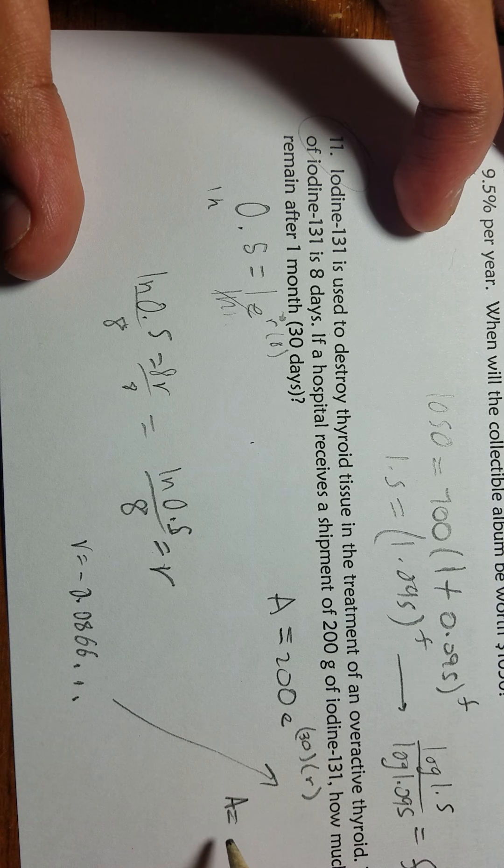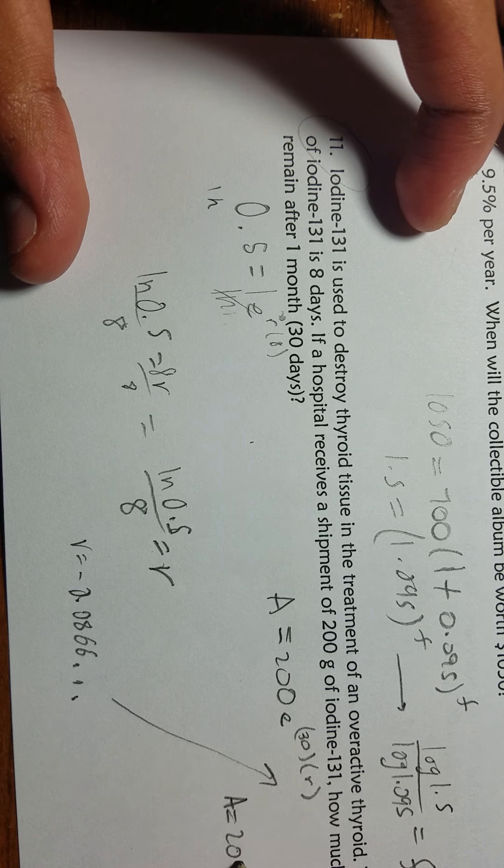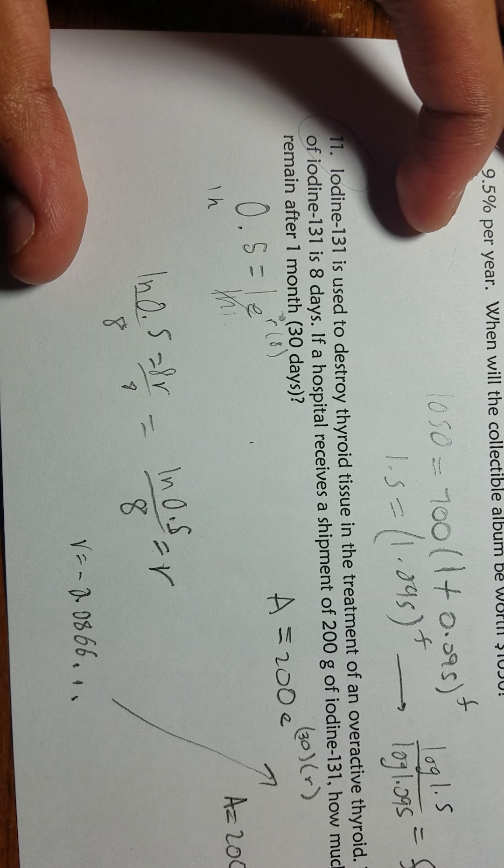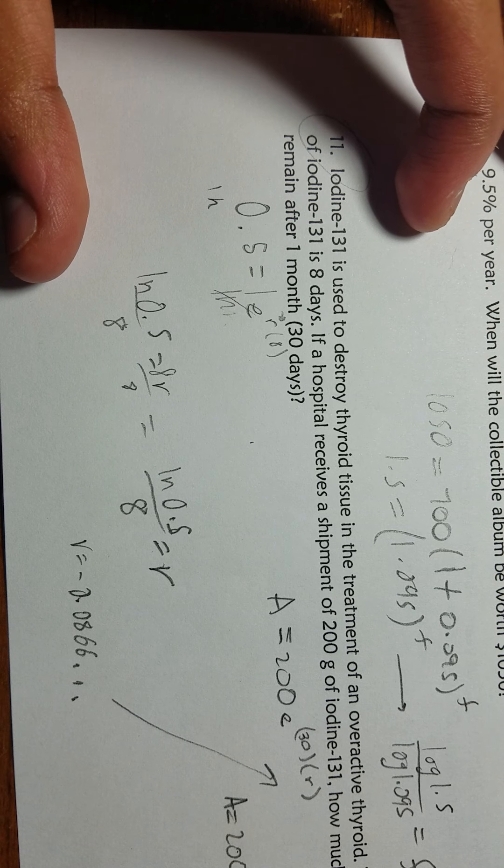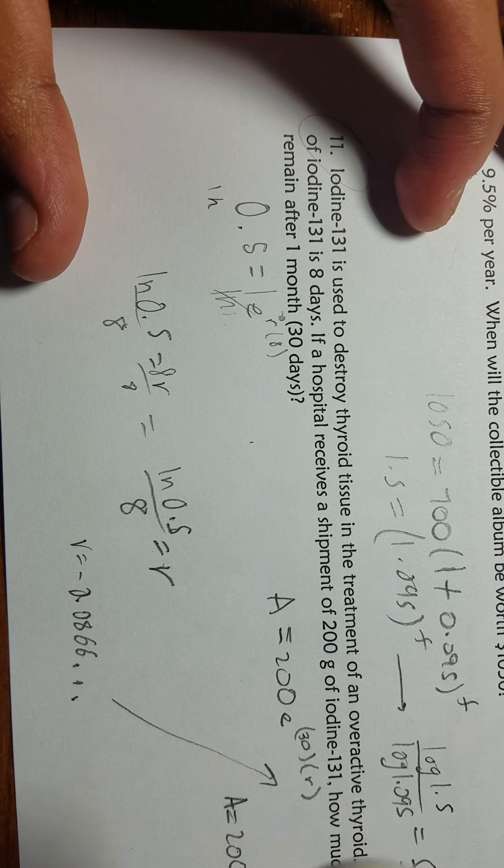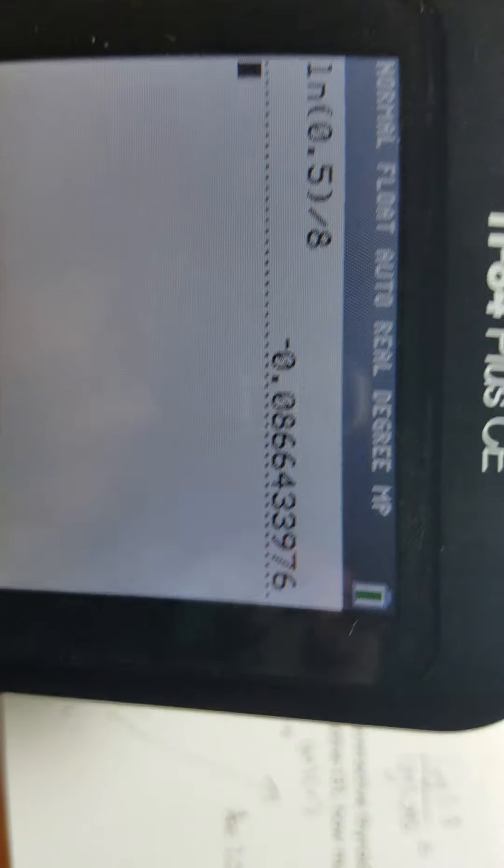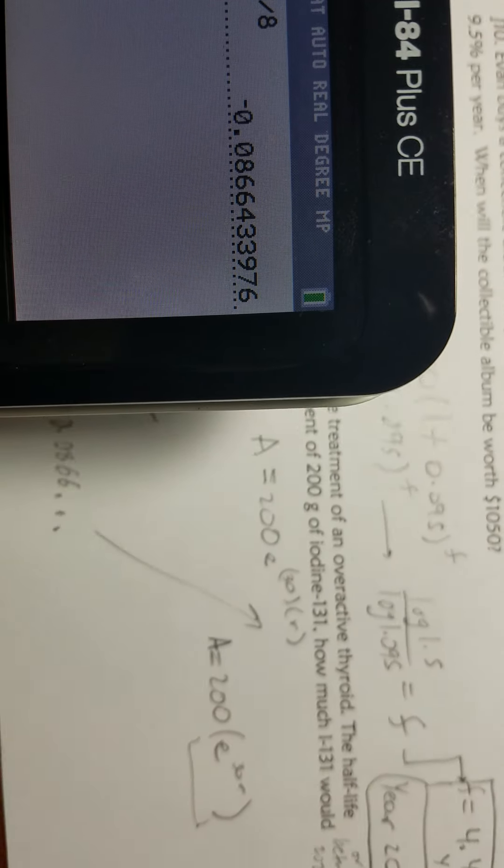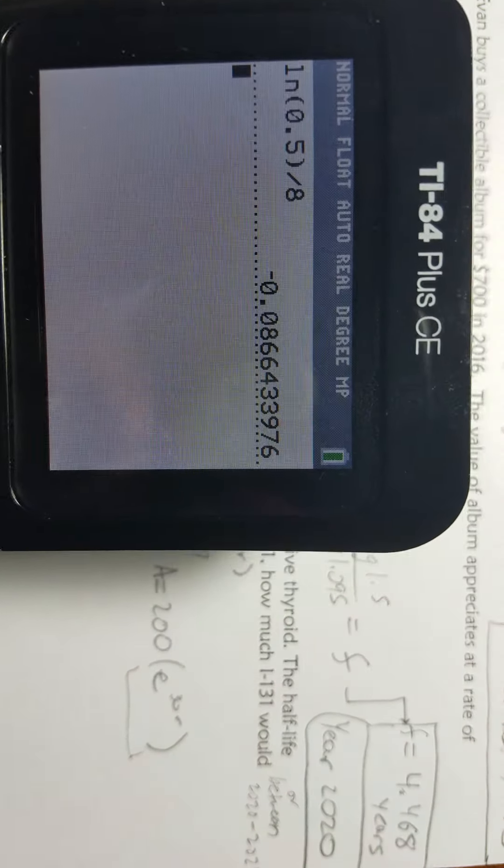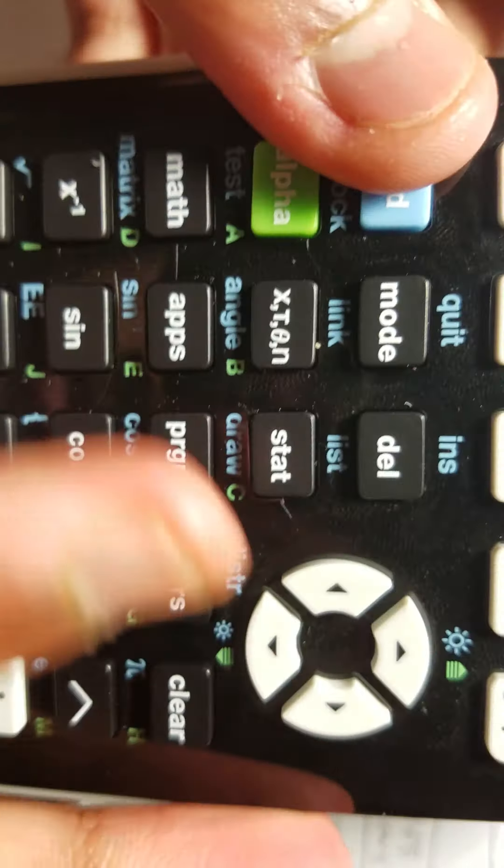Now what you're going to put into the calculator is, first you want to focus on this e part with 30 and r here. Focus on this, put that in your calculator. We already have this number right here, so based on the equation we have right here, we just go second e.